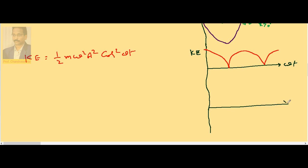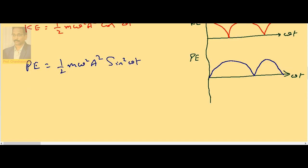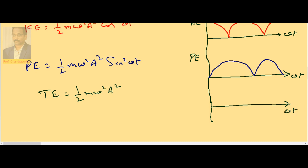Potential energy is given by ½mω²a² sin²(ωt). At 0° it starts from 0, at 90° it becomes maximum, at 180° it returns to 0, and so on. At points where kinetic energy is maximum, potential energy is minimum, and vice versa. For total energy: since sin²(ωt) + cos²(ωt) = 1, total energy = ½mω²a², which is constant. Therefore the total energy graph is a straight horizontal line — total energy remains constant at every point.